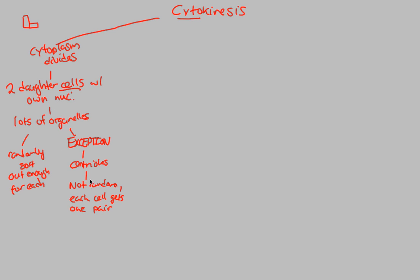The centrioles are always, always, always given one pair to one daughter cell and the other pair to the other daughter cell. Each cell always gets one pair. That shows you the importance of the centrioles. And then finally, at the end result of this, you actually return and begin the next cycle. The nucleus specifically goes back to interphase.